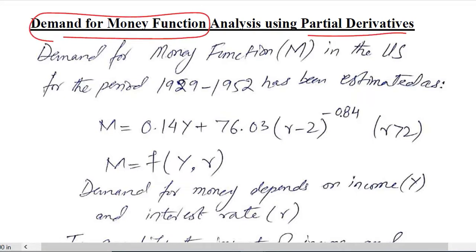Here we are assuming that we are given a certain function, and this function is based upon data from 1929 to 1952. It is estimated for US economy and shows the demand for money. It is represented by M, the demand for money, and it is equal to this function.